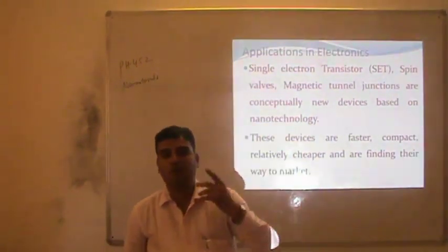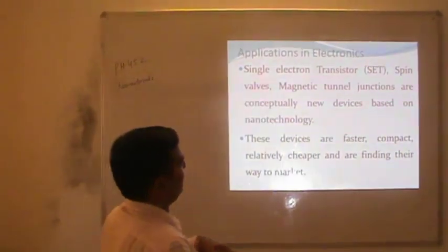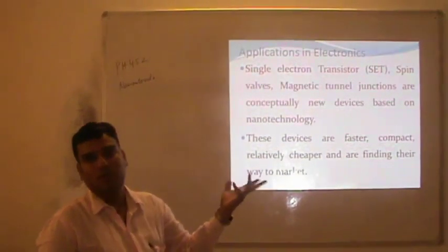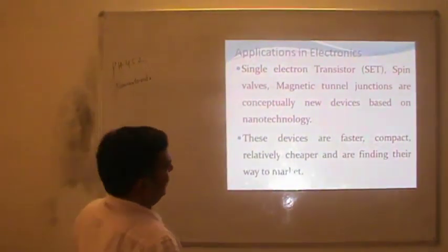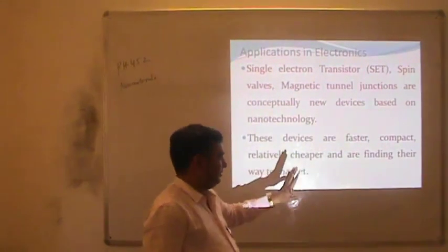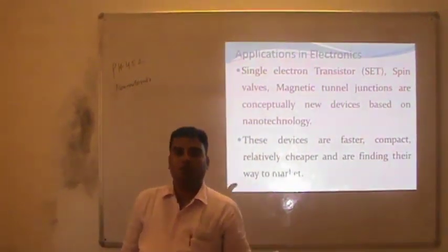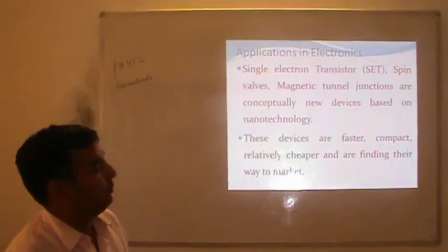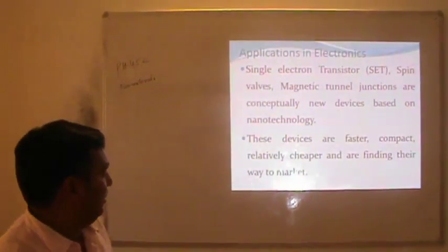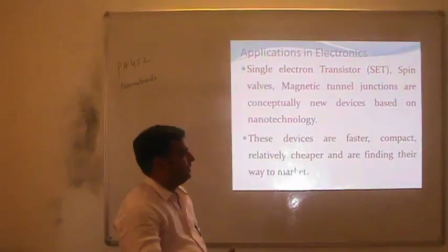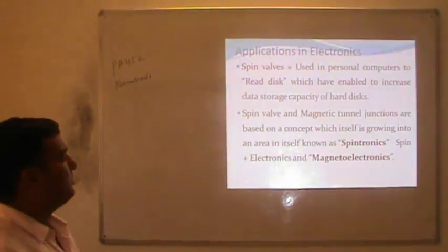Spin valves are based on spintronics, which is the combination of spin and electronics. Magnetic tunnel junctions are also based on the same concept of spin. These devices are faster, compact, relatively cheaper, and are finding their way to market. Still, we don't have these devices in the market, but possibly in 5 to 10 years, when these devices come to market, there will be a change in the speed of everything.